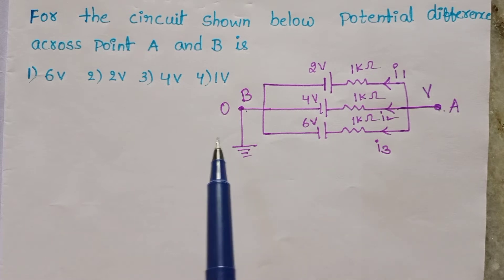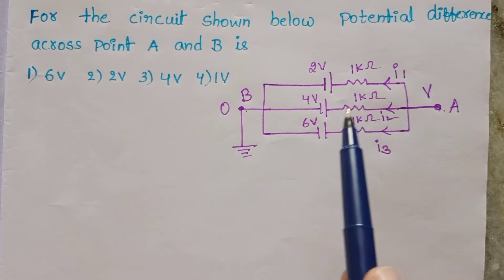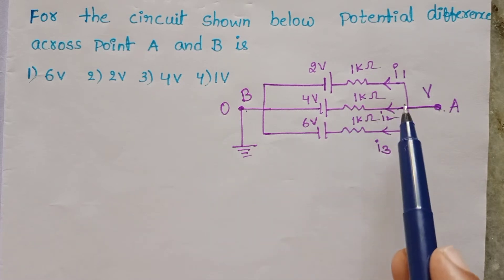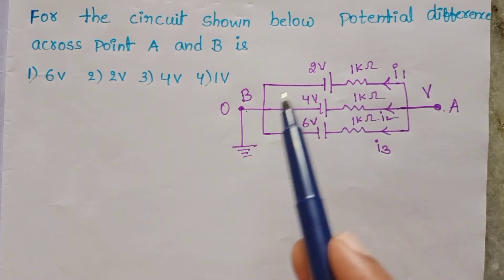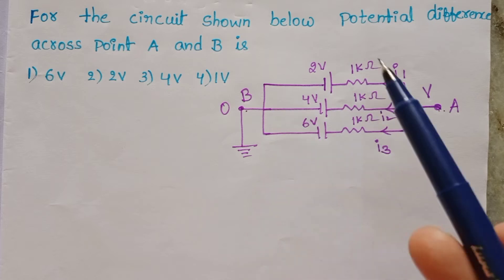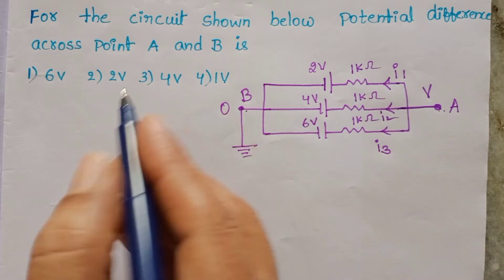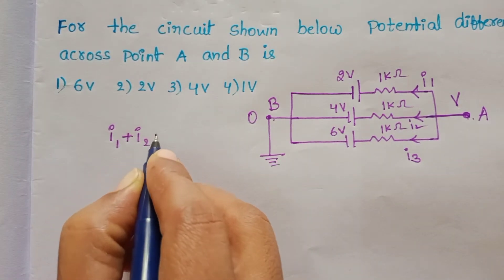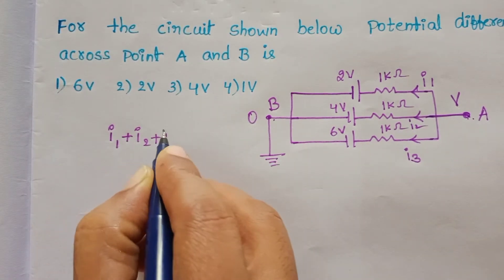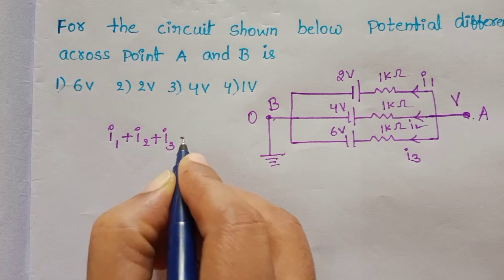By using Kirchhoff's Current Law, the sum of the currents passing through points A and B is 0. So I1 plus I2 plus I3 equals 0.